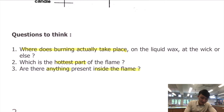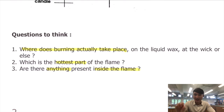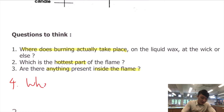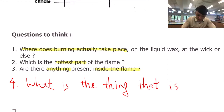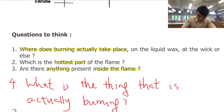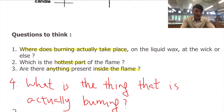The third question is: are there anything present inside the flame? The flame appears to be a moving body of yellow and red, but is there actually something inside the flame? Are we able to take it out? And the fourth question is: what is the thing that is actually burning? We know the candle burns, but there is solid wax, liquid wax, wax vapor, or maybe other things. So what is exactly burning in a candle flame, and what keeps the flame sustained on top of the wick?